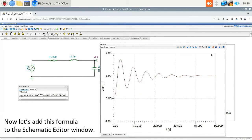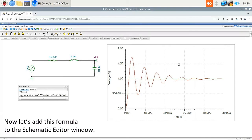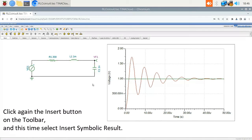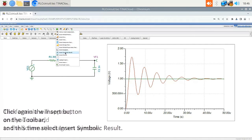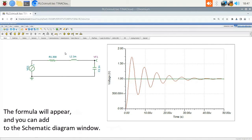Now let's add this formula to the Schematics Editor window. Click again the Insert button on the toolbar, and this time select Insert Symbolic Result. The formula will appear, and you can add to the Schematic Diagram window.